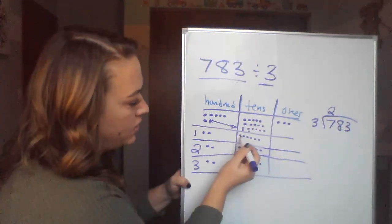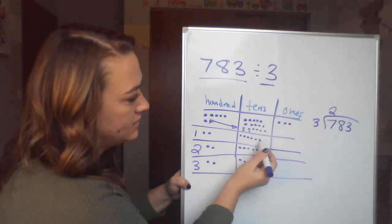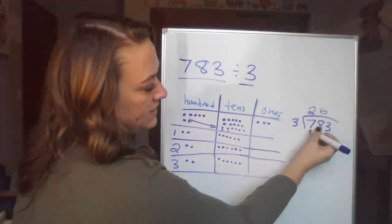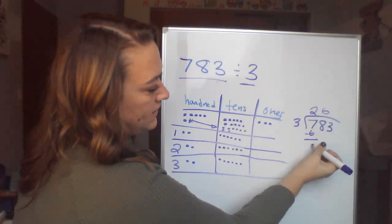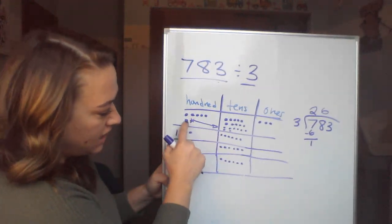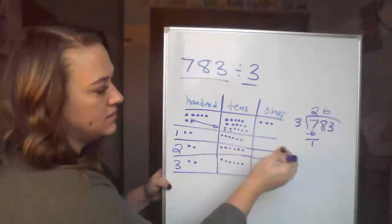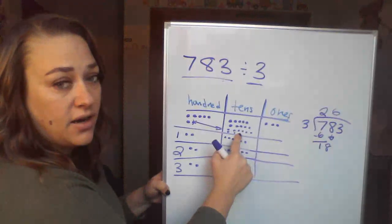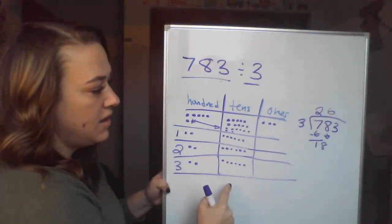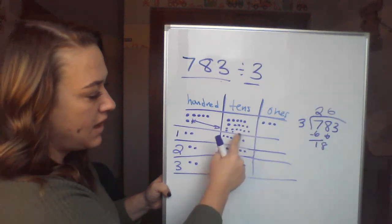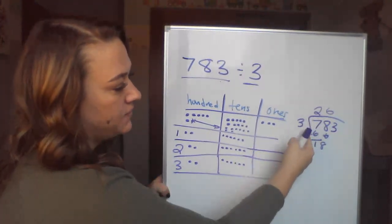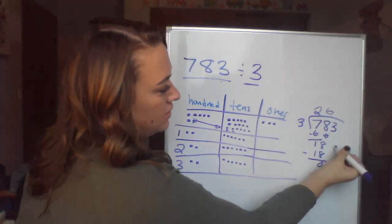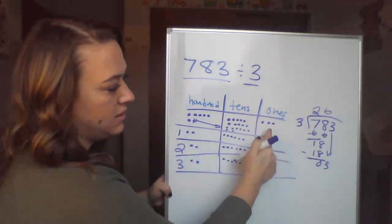Now, how many do I have in my tens? I have 6 there. So 3 times 2 gives me 6. 7 minus 6 left me with 1. That's that 1 that I had to decompose into my tens. When I brought down my 8, that left me with 18. I had 18 here that I had to break into the three groups. And how many did we have in each group? We had 6. So 3 times 6 gave us that 18.